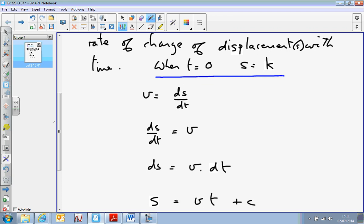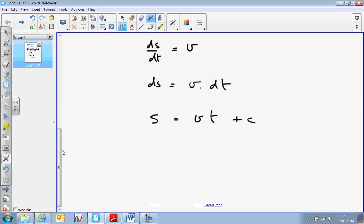So putting in the initial conditions, when t equals 0, this disappears. And so s equals k. So we've got k equals c. In other words, my constant of integration is k.